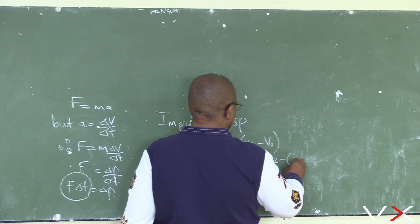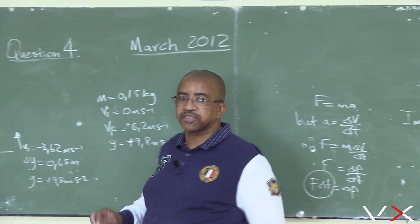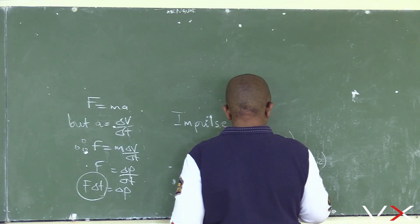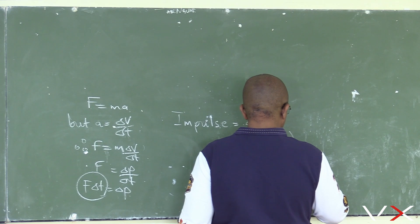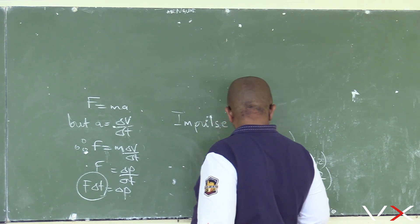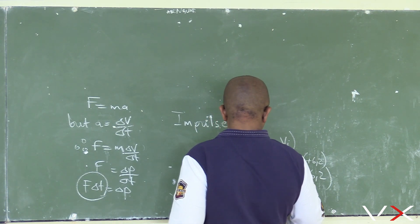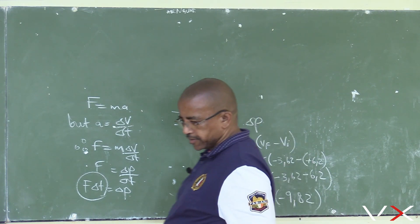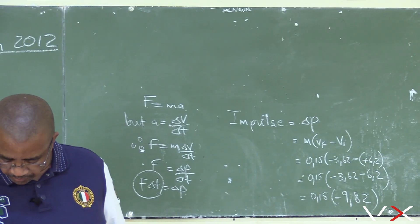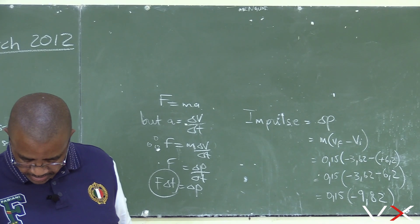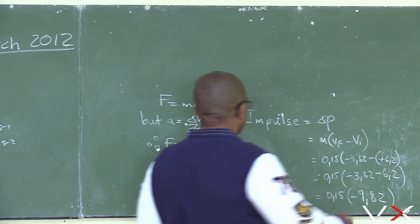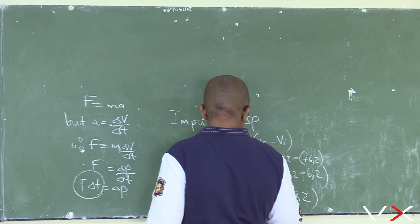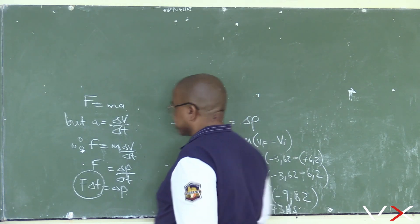The final velocity is minus 3.62 m/s (upward, so negative) and the initial velocity is plus 6.2 m/s (downward, positive). So we have 0.15 times (minus 3.62 minus 6.2), which gives 0.15 times minus 9.82, equals minus 1.473 Newton seconds. So that is the impulse.